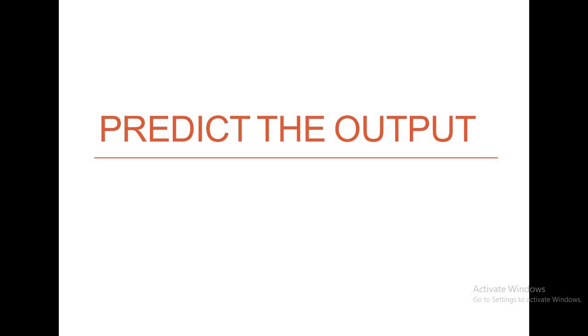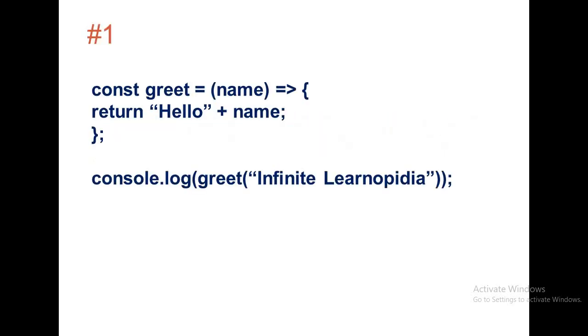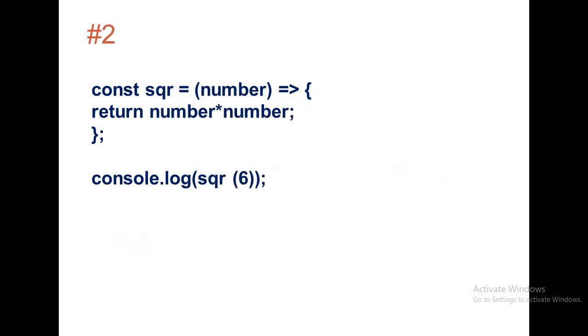Welcome to the video. Let's learn how to predict the output of ES6 code. Let's understand this code again. In this code, SQR is the arrow function. You can identify arrow functions when you see this arrow, which is also called a fat arrow.